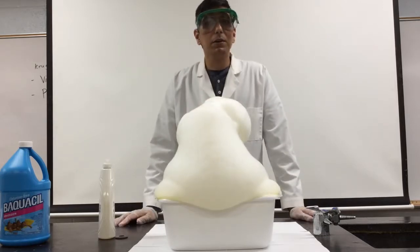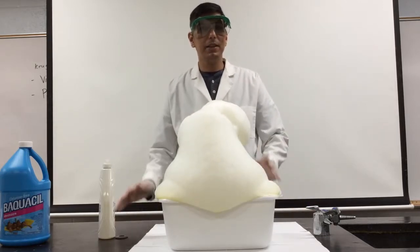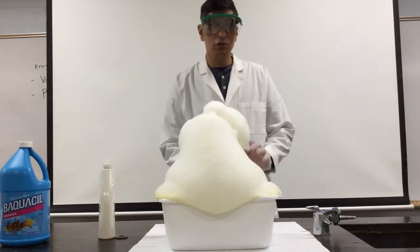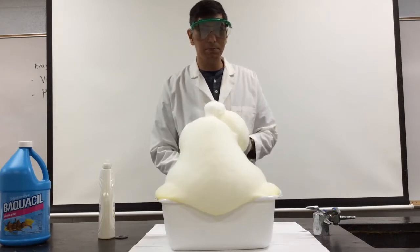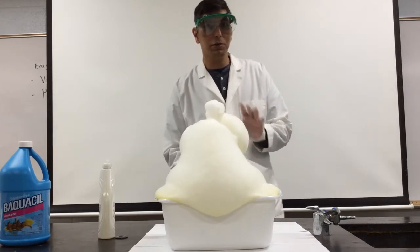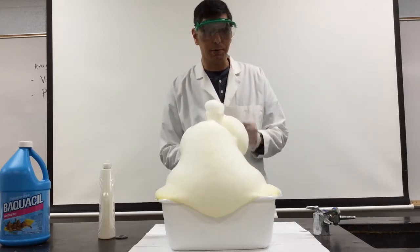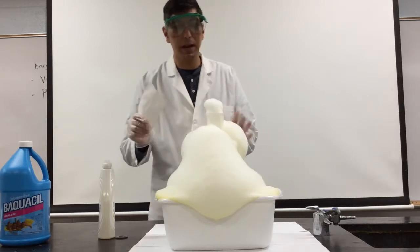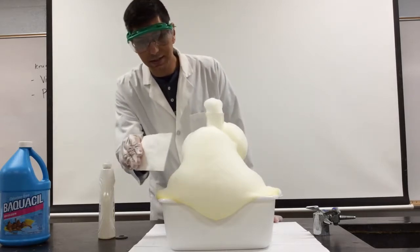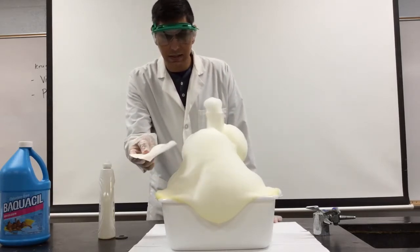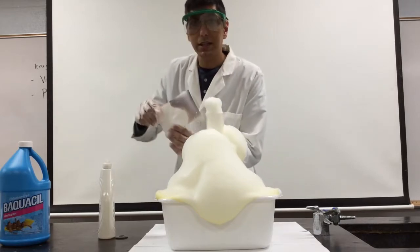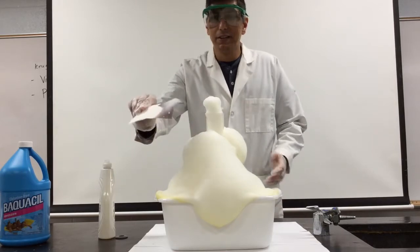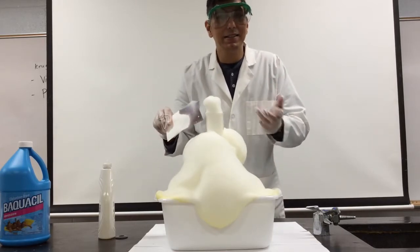One of the characteristics of a catalyst is that it's the same at the end as it is at the beginning. So that means there should be some potassium iodide here in the tub. I know that iodide will turn a piece of paper purple because iodide reacts with the starch in the paper. Let's see what happens when I touch the paper to the suds. Look at that — it turns the paper purple. So that means the iodide is still here.